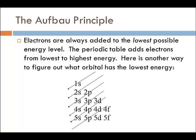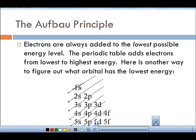There are a few principles or rules that go along with making electron configurations and orbital diagrams. The first is called the Aufbau principle. Aufbau in German means building up — electrons are always added to the lowest possible energy level, building up from lowest to highest. Another way to figure out the order is to write out all the S's, then the P's, then the D's, then the F's, and draw diagonal arrows. Following those arrows gives the order: 1s, 2s, 2p, 3s, 3p, 4s, 3d, 4p, 5s, and so on.